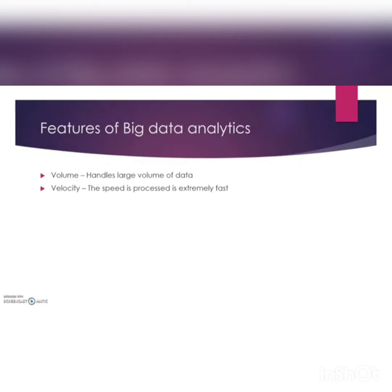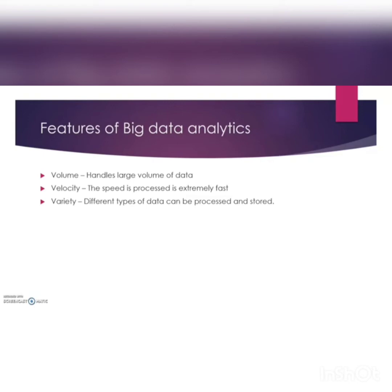The third feature is Variety. You can search any type of data — text, audio, or video. For example, if you want to search a video about a game, you give the title and get thousands of videos. If you have a doubt while studying, you type a word in Google and get thousands of definitions. Big data analytics can handle varieties of data.